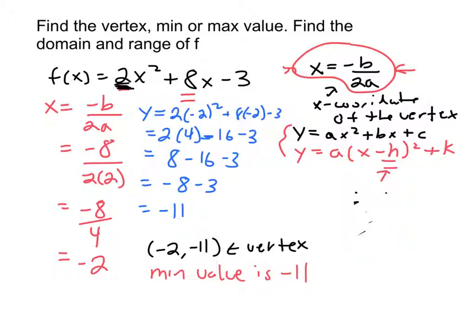Okay? So let me erase this. That was just a demonstration, not necessarily a graph of this function, right? Or definitely not a graph of this function. So the min value is negative 11, which occurs when x equals negative 2.